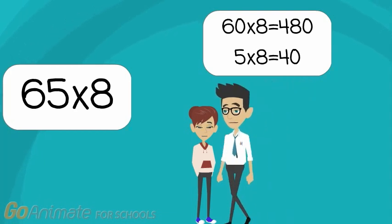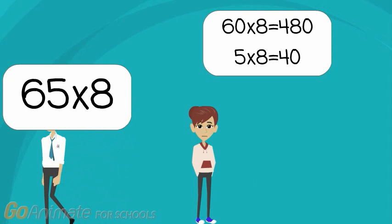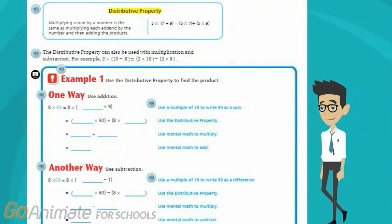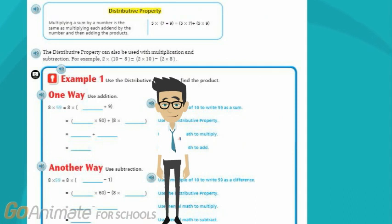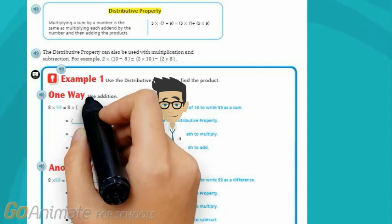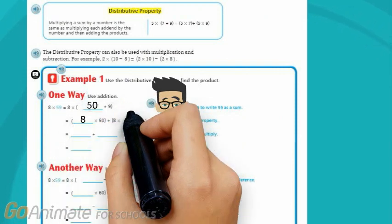Let's go back to the book and read what they have to say about the distributive property. 8 times 59 is the same or equal to 8 times 50 and 8 times 9.